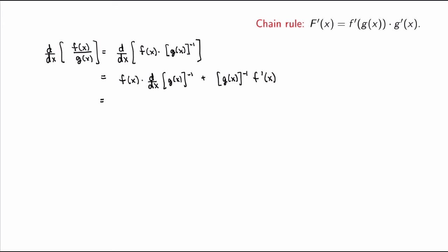To evaluate d/dx[g(x)⁻¹], note it's a composite function — inner function g(x), outer function is the reciprocal. Using the chain rule: the derivative of the outer function gives −[g(x)]⁻², times g′(x). So we get −f(x) · g′(x) · [g(x)]⁻² plus f′(x) · [g(x)]⁻¹. You could stop here for any specific f and g, but let's go further to recover the standard quotient rule.